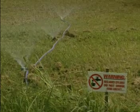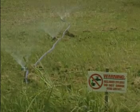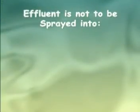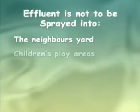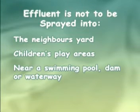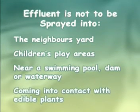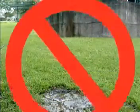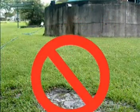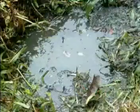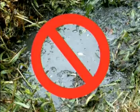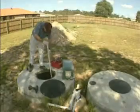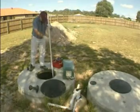It's important to check when surface irrigating that the effluent is not being sprayed into the neighbour's yard, onto the children's play area, near a swimming pool, dam or waterway, or coming into contact with edible plants. You should also ensure that ponding of treated effluent does not occur. These systems require regular servicing by licensed service personnel.